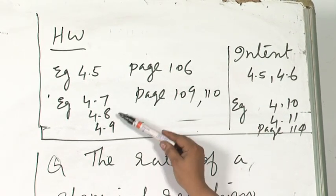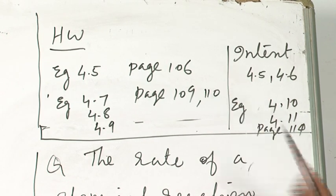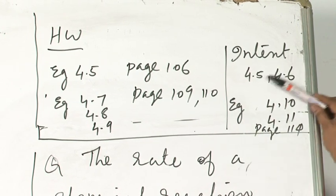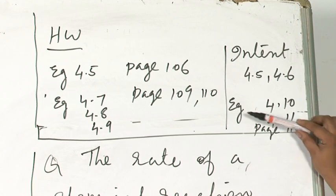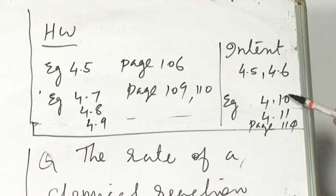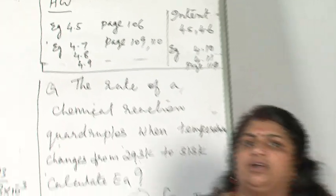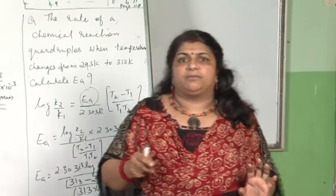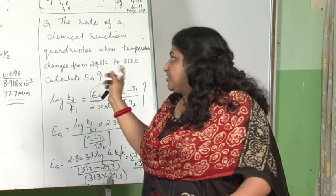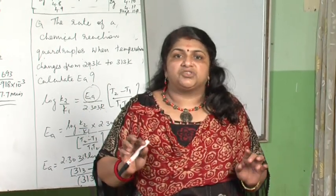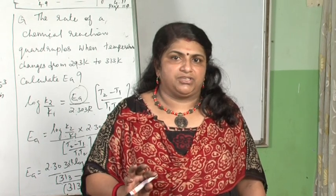Examples 4.7, 4.8, 4.9 on page numbers 109 and 110. Index questions 4.5 and 4.6, then examples 4.10, 4.11 on page number 114. These questions you have to do. Apart from that, textbook back exercises, all numericals related to this which we have solved have to be done because this is a sure shot question for board examination.